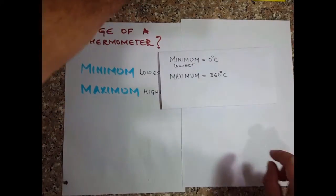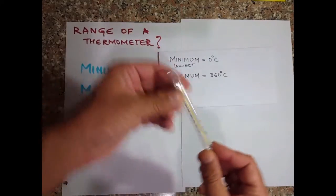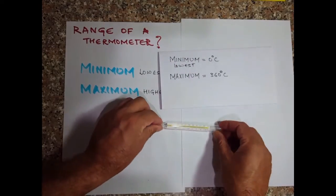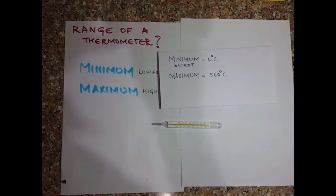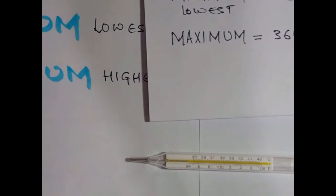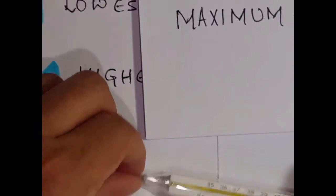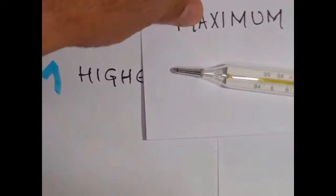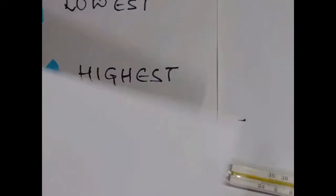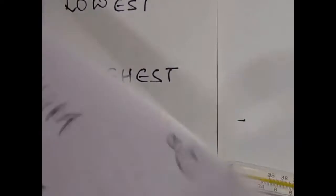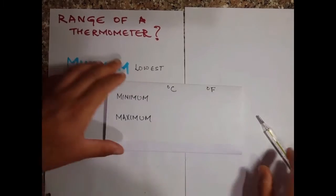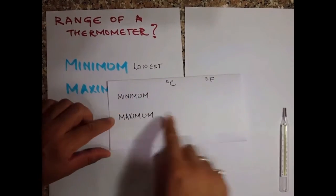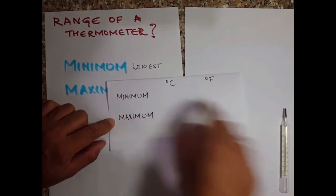Now let us look at a clinical thermometer that we make use of back home and let us find out what is the range of the clinical thermometer. I'm going to zoom in and we'll go as close as possible on this. I'll also use a newer sheet where we can record the values.